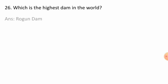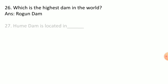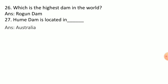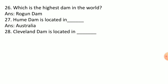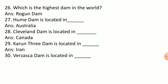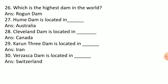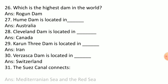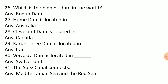The Rogun Dam is the highest dam in the world. The Hume Dam is located in Australia. The Cleveland Dam is located in Canada. The Karun-3 Dam is located in Iran. The Vajont Dam is located in Switzerland. The Suez Canal connects the Mediterranean Sea and the Red Sea.